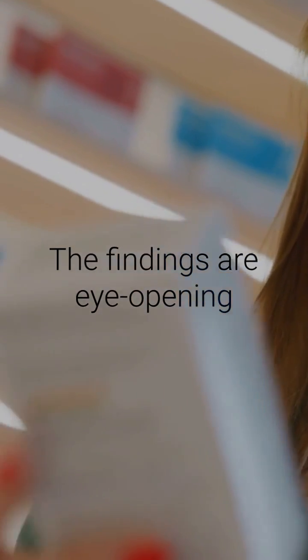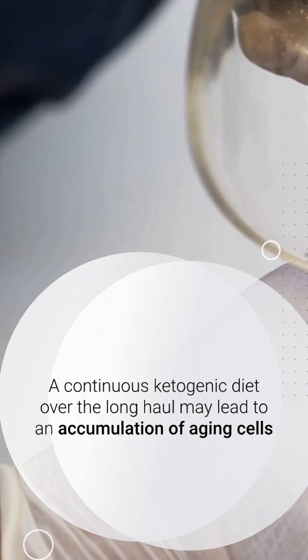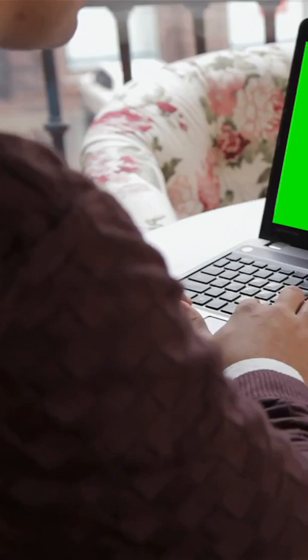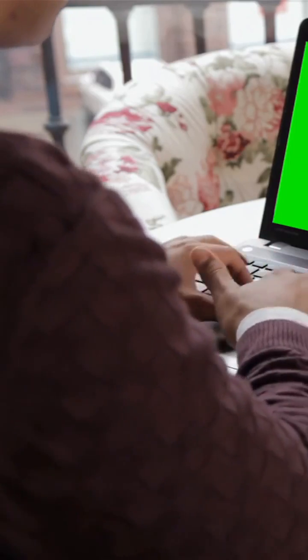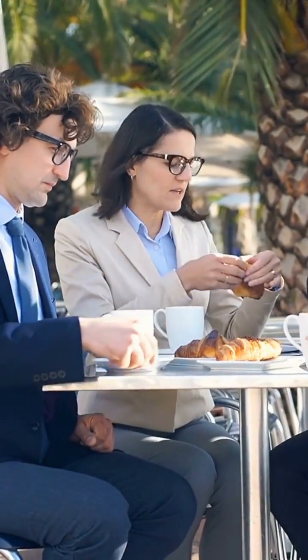The findings are eye-opening. A continuous ketogenic diet over the long haul may lead to an accumulation of aging cells, potentially impairing heart and kidney functions. On the flip side, an intermittent approach to the ketogenic diet, incorporating regular breaks, appeared to sidestep the inflammatory effects associated with aging cells.